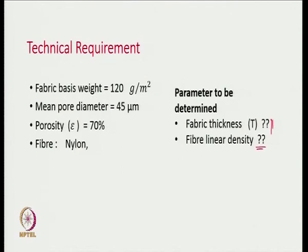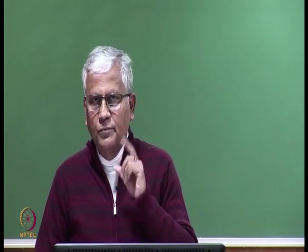Some technical requirements or needs are given and the manufacturer has to manufacture this. He has to find out two important parameters: what should be the thickness of the fabric so that he sets his machines to achieve that thickness, and what should be the right fiber linear density to choose so that the mean pore diameter is around 45 micrometers.